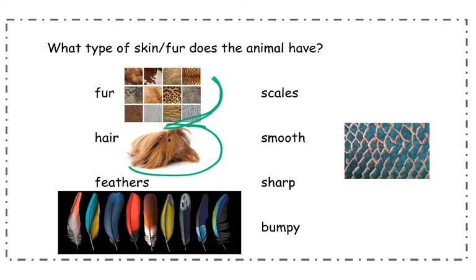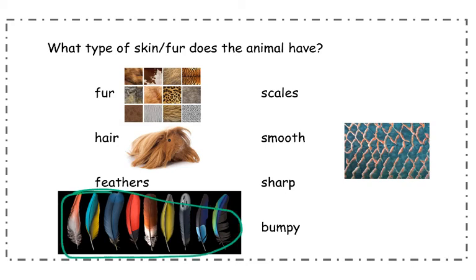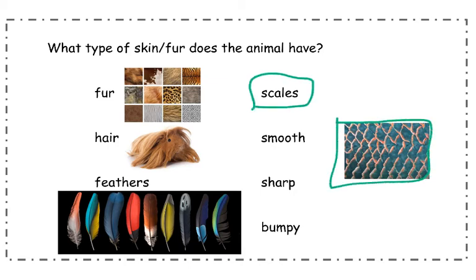But not all animals have fur or hair. Some animals have feathers — here are some examples of different colors of feathers. There are also a lot of animals that have scales. Lizards have scales, crocodiles, fish, and snakes all have scales. There are all different kinds of scales: some scales can be really smooth, some are sharp with pointy ends for protection, and some scales are just bumpy.